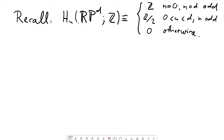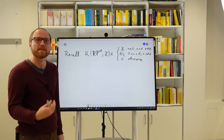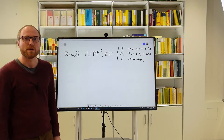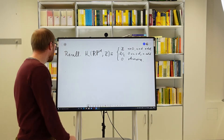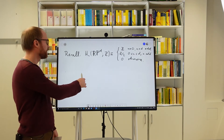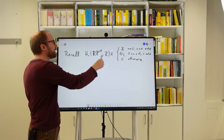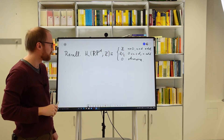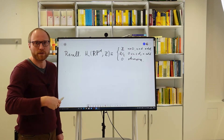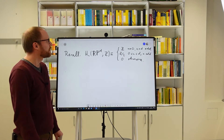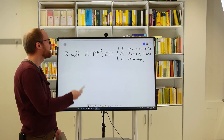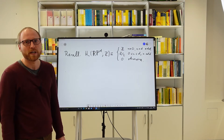We learned the method to compute homology with coefficients in a different module from the integral homology. Let's do this for Z/2 as our new coefficient module. There are two ingredients in the universal coefficient theorem to be computed: the tensor product of the integral homology with Z/2, and the Tor term on the right-hand side of the UCT exact sequence. Since the sequence splits, the new homology with Z/2 coefficients will be the direct sum of these two results.